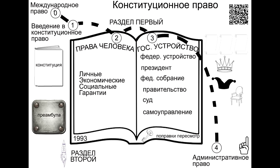The history of Russian constitutionalism, in the strict sense of the word, began with the post-revolutionary period. In the Russian Empire, constitutional acts existed in Poland and Finland. The main state laws of 1906 had a certain significance for constitutional development. During the Soviet period, the constitutions of the RSFSR of 1918, 1925, 1937 and 1978, and the constitutions of the USSR of 1922, 1936 and 1977 were adopted. The current constitution of the Russian Federation was adopted in a national referendum on December 12, 1993.